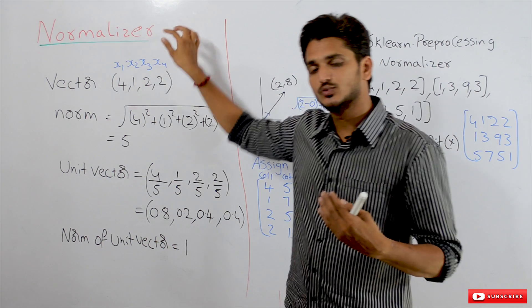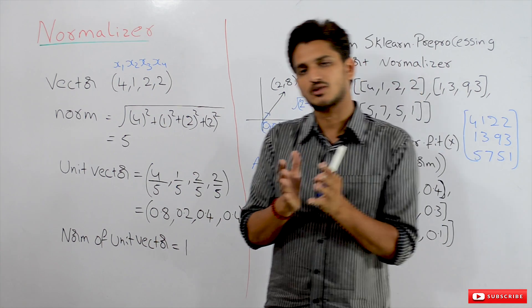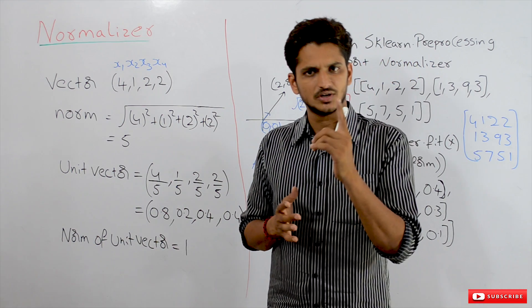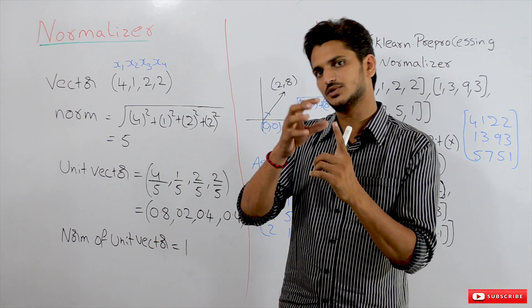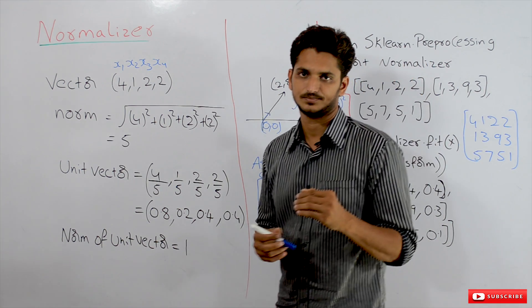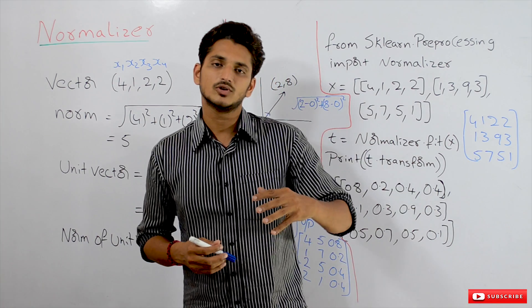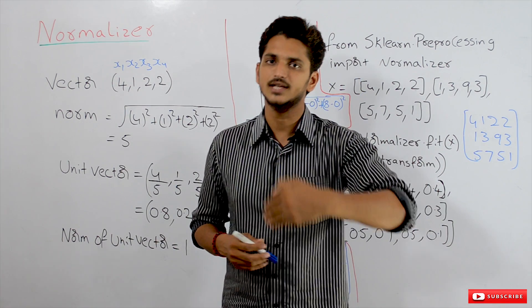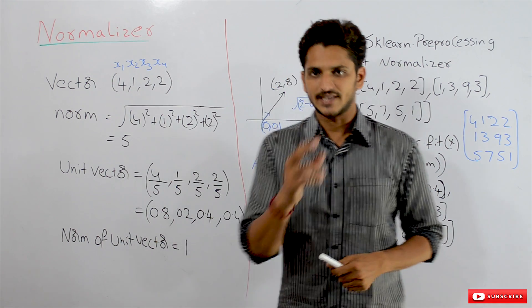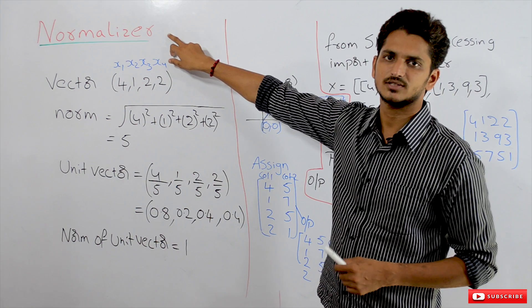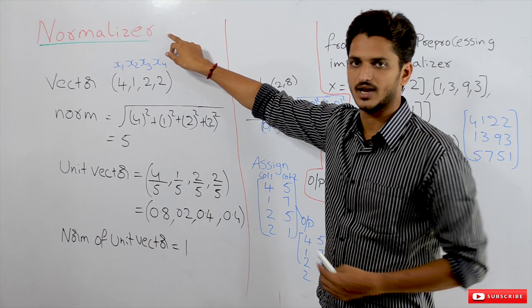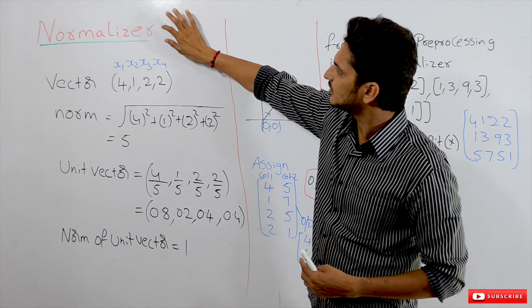In our last class we already discussed about the problems that we come across using numerical data, and we discussed the first technique to solve those problems — Min-Max Scaling. The second method for scaling is normalizing, and the third method is standardizing, which we will discuss in our next class. In this class we will discuss about normalizing.